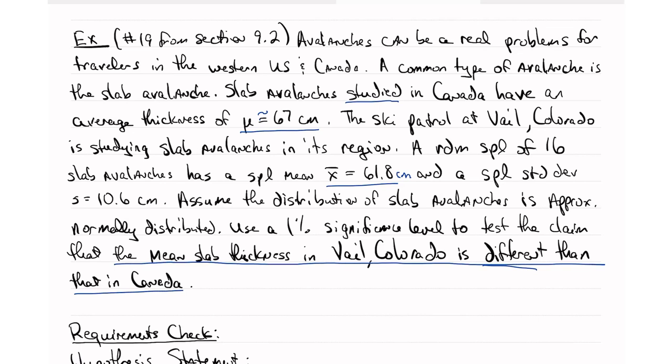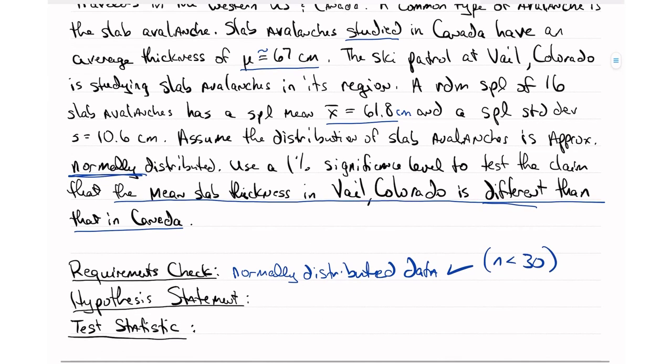So our requirements check. We're going to do almost everything the same except for one step that we're going to change. So the requirement checks are the same. It says assume that they're normally distributed. So normally distributed data. We're good because N is less than 30, but it doesn't matter if we start out with normally distributed data.